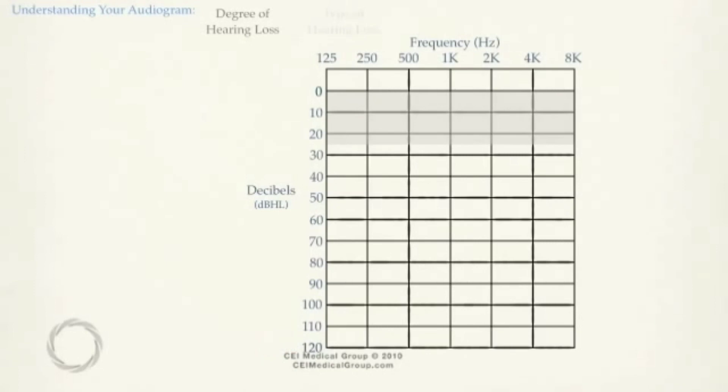Once your audiologist has determined the softest sound you can hear, she will draw a circle on the audiogram to record that particular frequency. Each frequency is tested until the measurements are obtained across the audiogram.